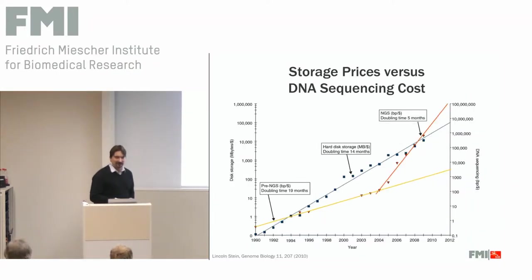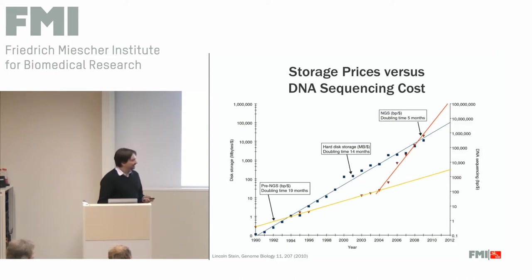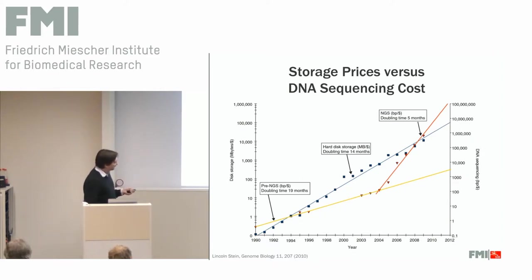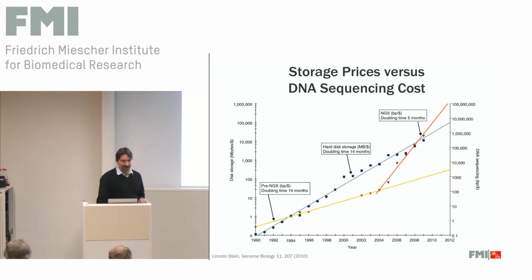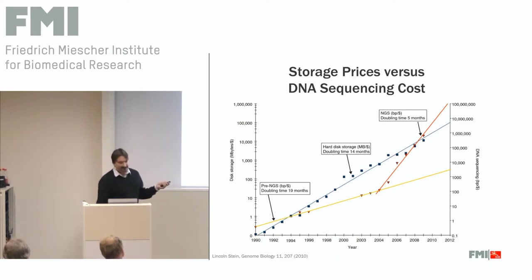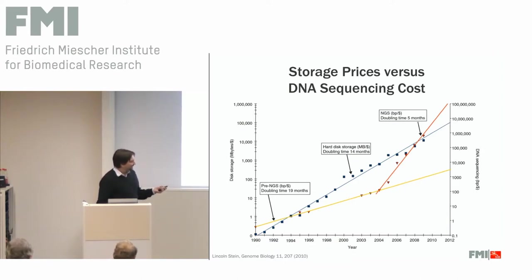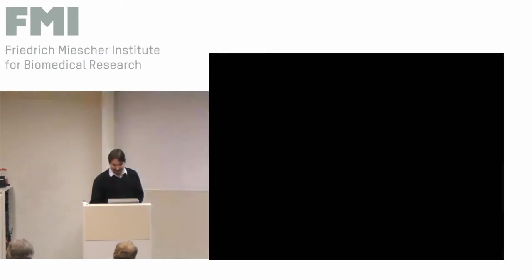Why is it still a bit of a data issue for us? The most important reason is because it's so cheap to sequence — people do it a lot. This is nicely illustrated on this plot here. If you look at the left y-axis, this shows you the number of megabytes of disk storage you can buy per dollar as a function of time — the blue curve. This is a log scale, so the fact that this is a linear curve shows you Moore's Law in action — it's exponential growth. You get more and more disk space for your dollar.